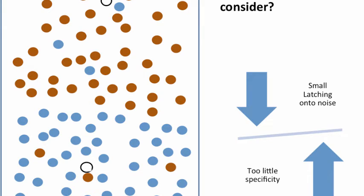The way we arrive at a good solution is to consider many values and see how they perform. We consider several values of K, partition the data, try each one out, and select the model that performs best. If K is too high, you have too little specificity; if K is too low, you latch on to noise.